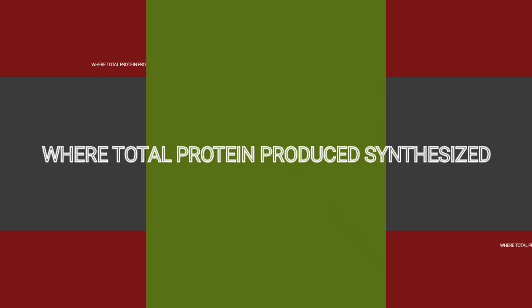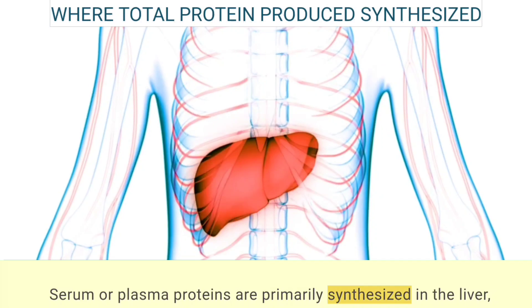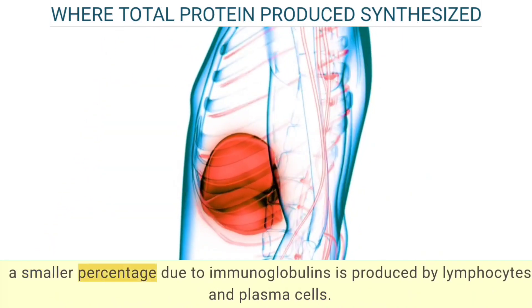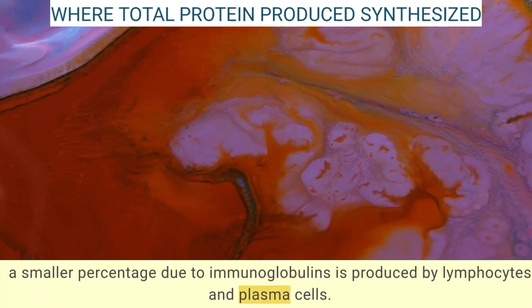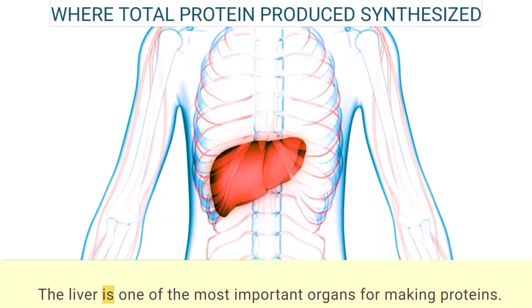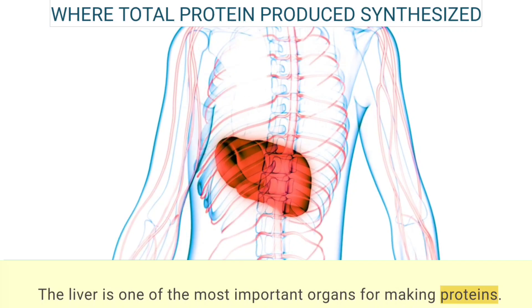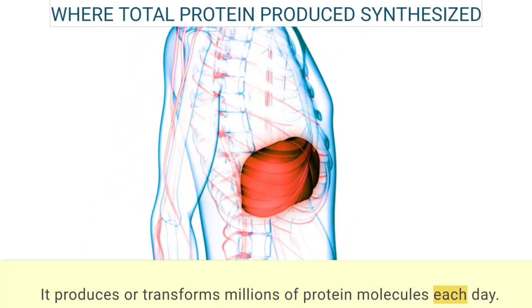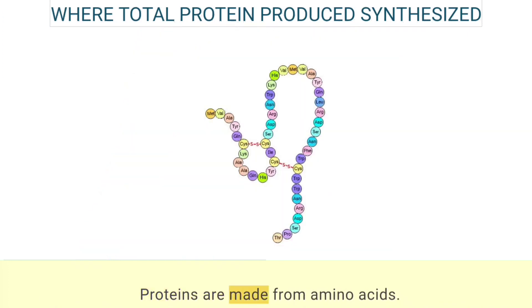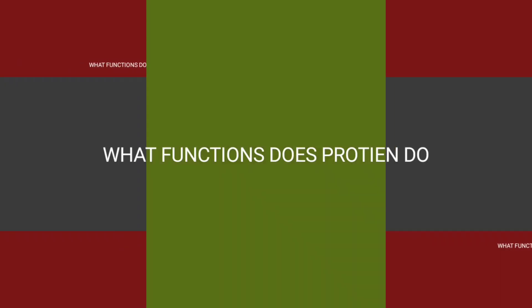Serum or plasma proteins are primarily synthesized in the liver. A smaller percentage, due to immunoglobulins, is produced by lymphocytes and plasma cells. The liver is one of the most important organs for making proteins, producing or transforming millions of protein molecules each day. Proteins are made from amino acids.